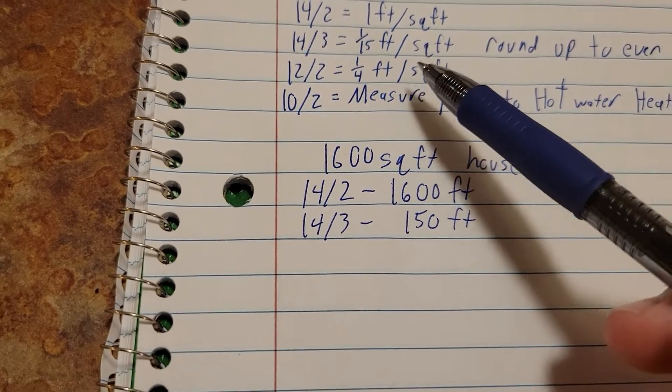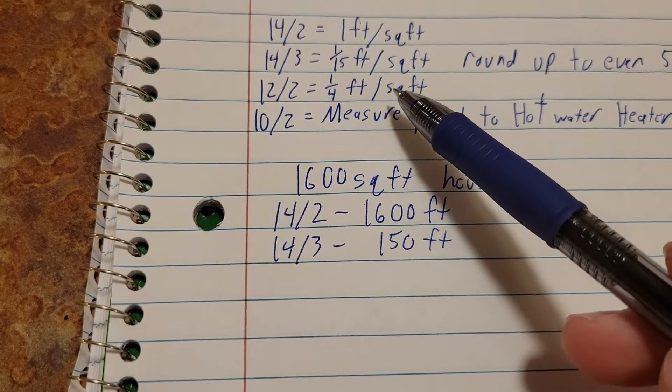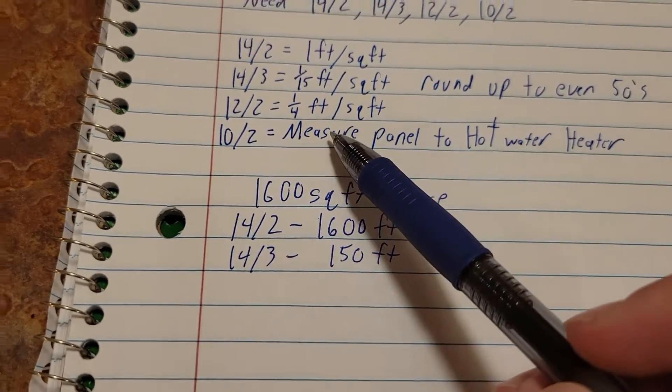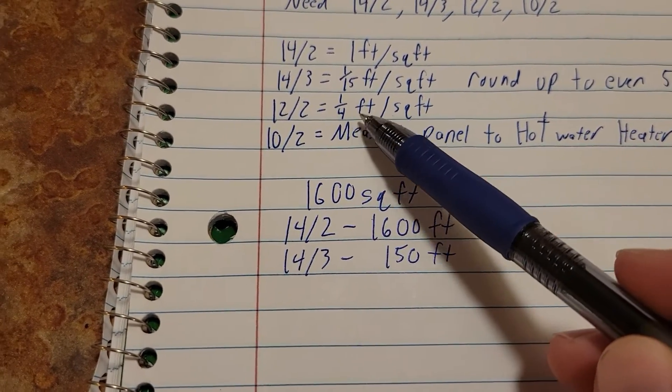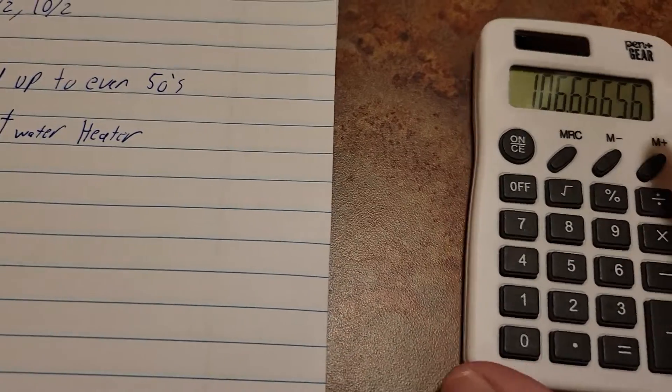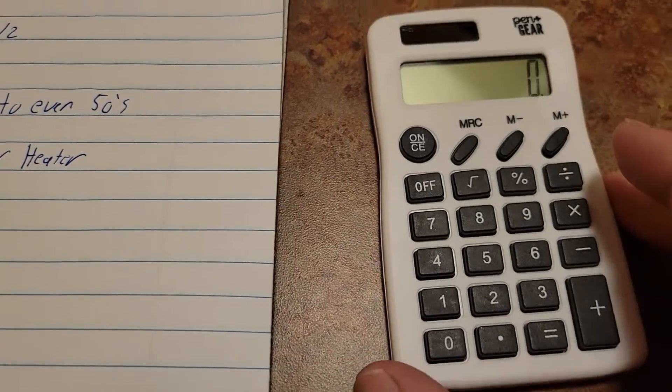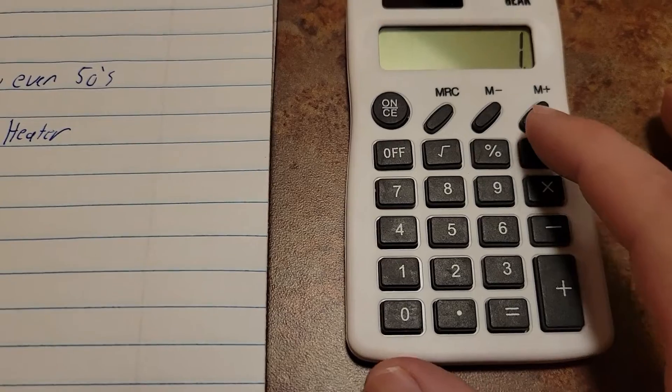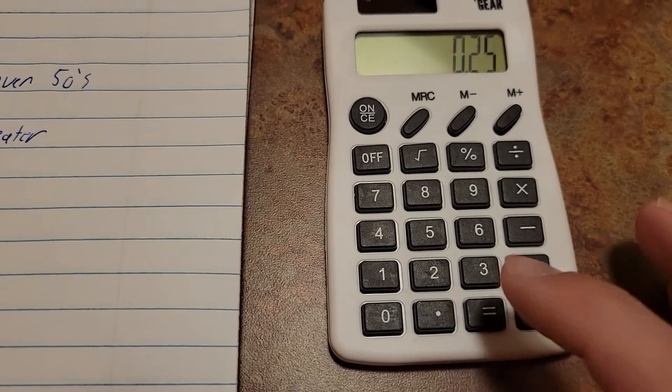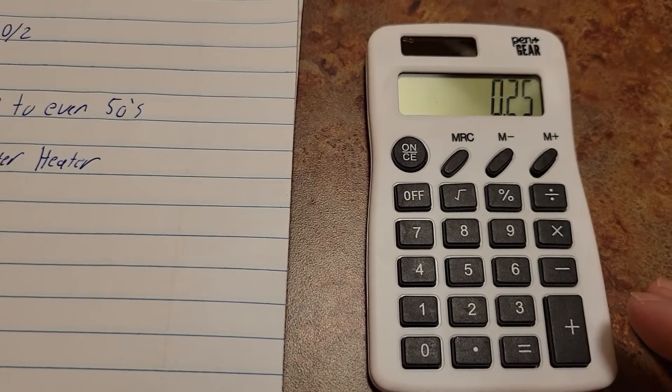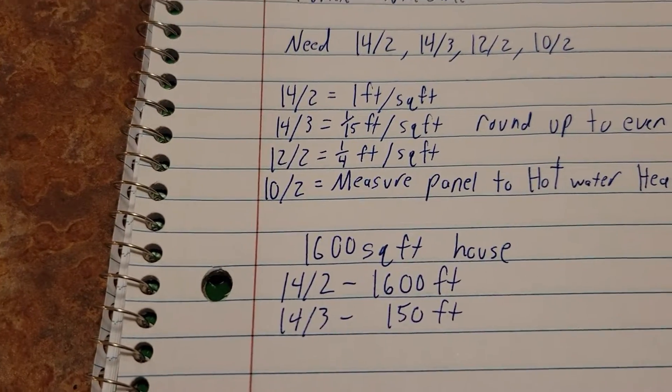So this calculation should cover all three of those. We're going to come over here and we're going to clear our calculator and divide one by four. One divided by four, for those of you that didn't already know, is 0.25. Now we're going to multiply that by how many square feet we have, so we're going to multiply times 1600.